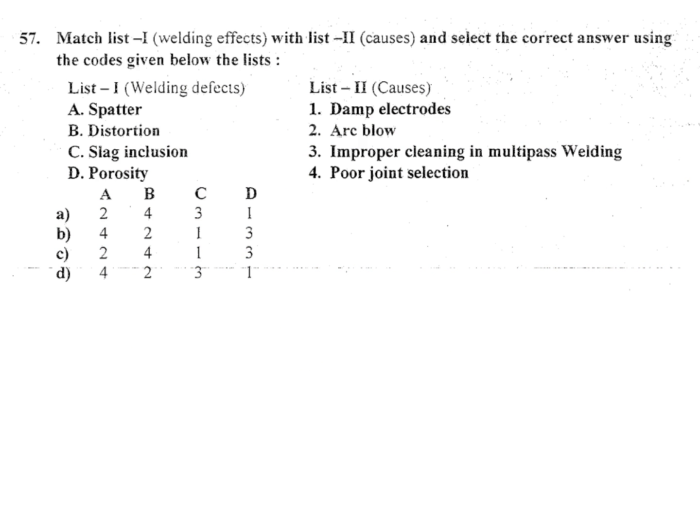Next question, list matching list 1 and list 2. A spatter, B distortion, C slag inclusion, D porosity. List 2 causes: 1 damp electrodes, 2 arc blow, 3 improper cleaning of in multiple pass welding, 4 poor joint selection.